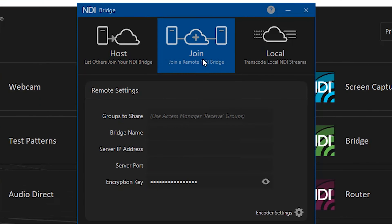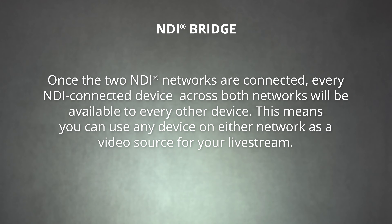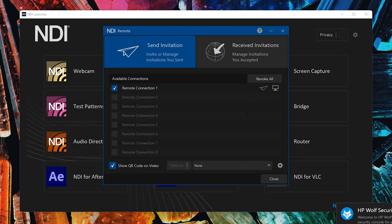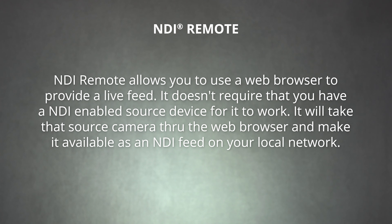Use the copy button. Then, over the second network, open NDI Bridge and choose the join option. Join using the information provided by the host. Once the two NDI networks are connected, every NDI-connected device across both networks will be available to every other device. This means you can use any device on either network as a video source for your live stream. If you only want to bring in one remote video source, you can opt out and use NDI Remote. NDI Remote allows you to use a web browser to provide a live feed — it doesn't require an NDI-enabled source device. It will take that source camera through the web browser and make it available as an NDI feed on your local network.